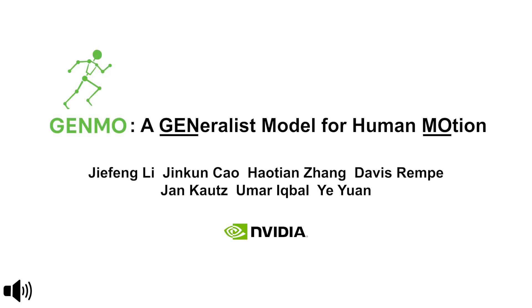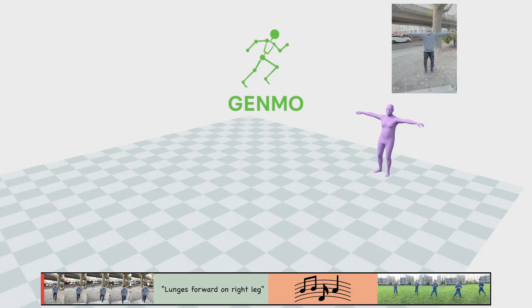Genmo is the first method that achieves state-of-the-art global motion estimation while enabling flexible human motion generation using video, text, music, and 2D keypoints.